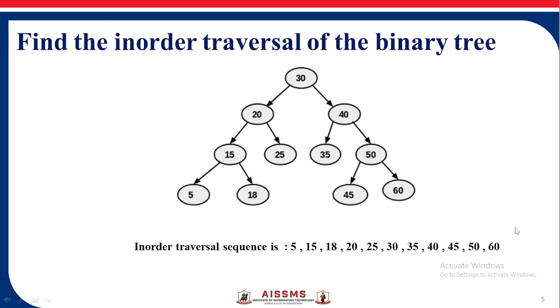Find the in-order traversal of this binary tree. We know for in-order traversal, we traverse as left-root-right. So we get the sequence as 5, 15, 18, 20, 25, 30, 35, 40, 45, 50, 60.